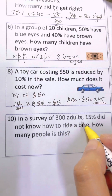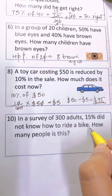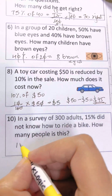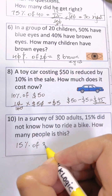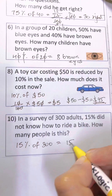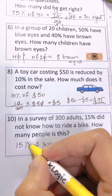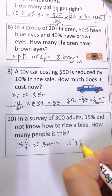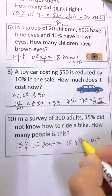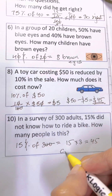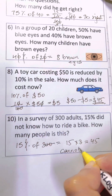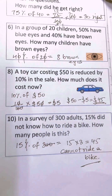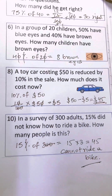In a survey of 300 adults, 15% did not know how to ride a bike — how many people is this? 15% of 300: cancel out the percent symbol with the two zeros, 15 times 3 is 45. So 45 people cannot ride a bike. Thank you so much, bye-bye, take care.